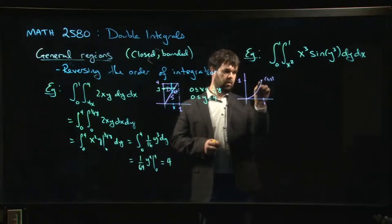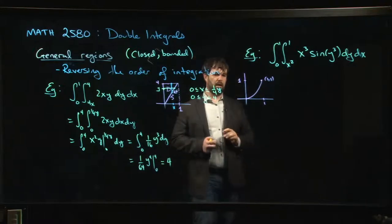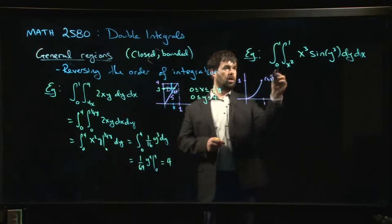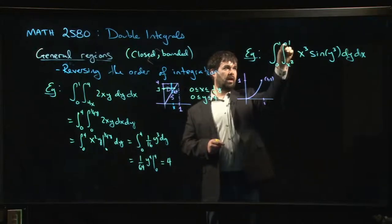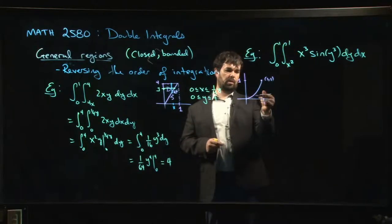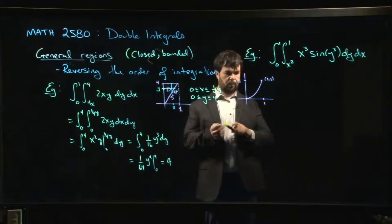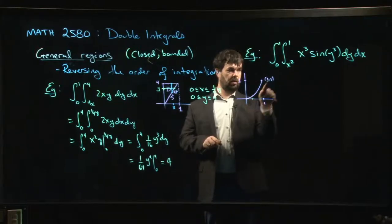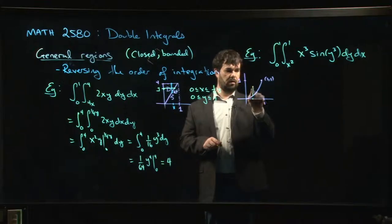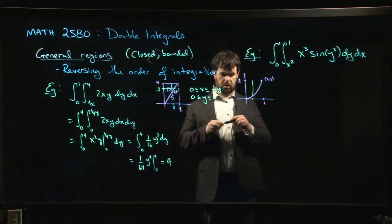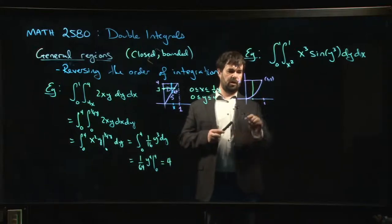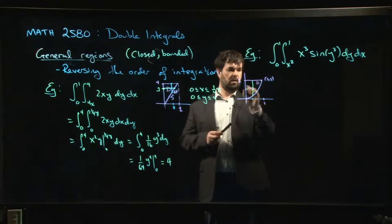And so again we have to decide, are we above the parabola, are we below? Well, the fact that y has to be between x squared and 1, not between 0 and x squared, we're saying if we fix an x value, y starts on the parabola, starts at x squared, goes until it hits 1. That tells me that my region is this one here. So this is my region D.